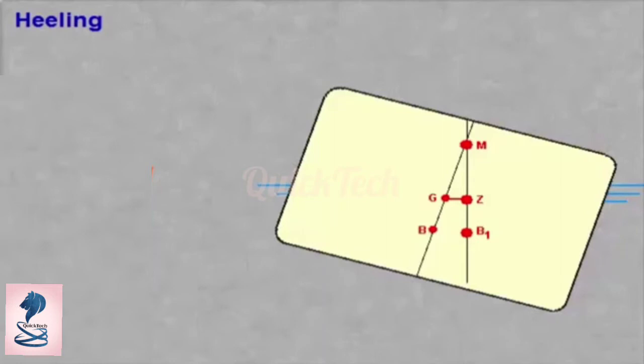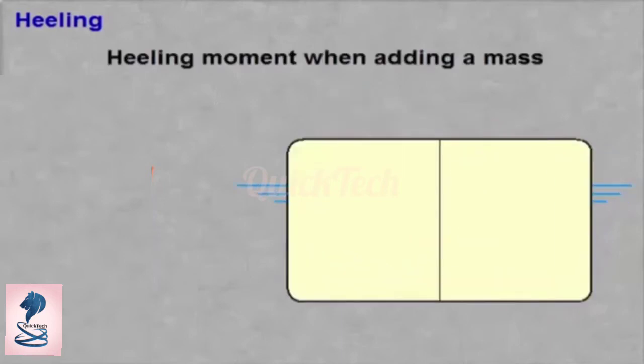On the line drawn between B1 and M, we now get a new point called Z. Z is placed on a straight angle from the line B1-M through G. The distance between G and Z is a measurement of the forces trying to keep the ship from heeling.